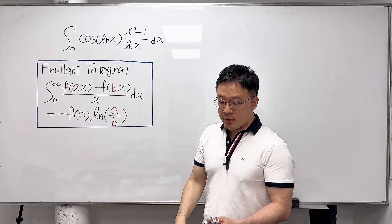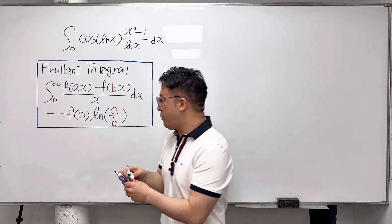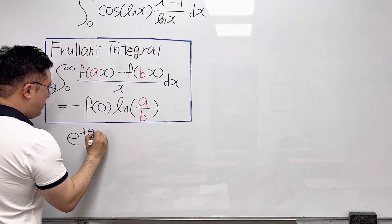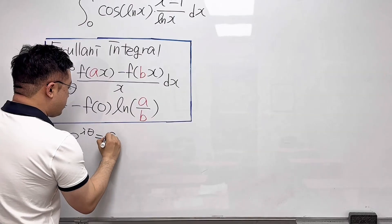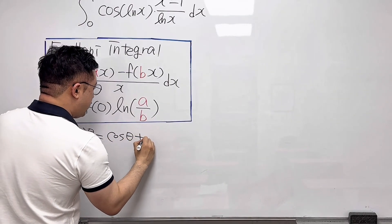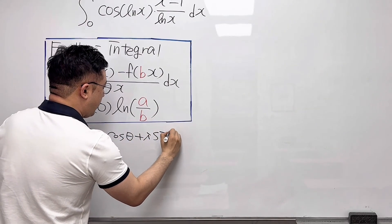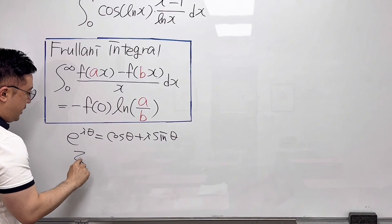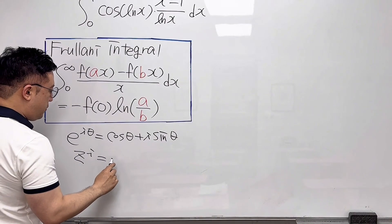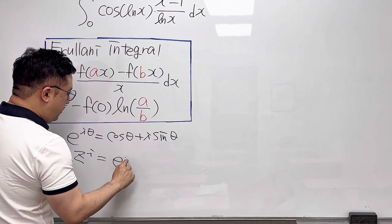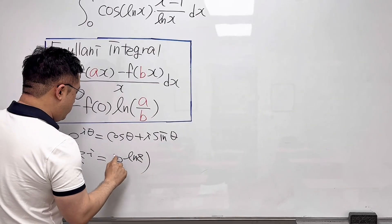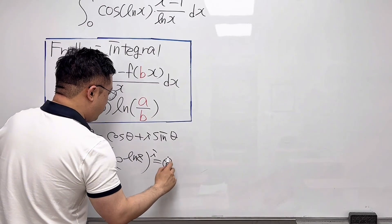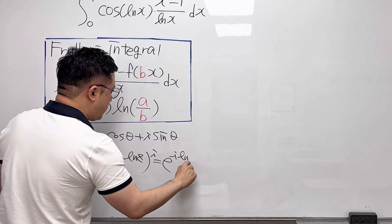I'll be starting off with Euler's formula. We already know that e^(iθ) is the same as cosine θ plus i times sine θ. And for the complex number z, z^i is equal to e^(ln z)^i, which is the same as e^(i·ln z).